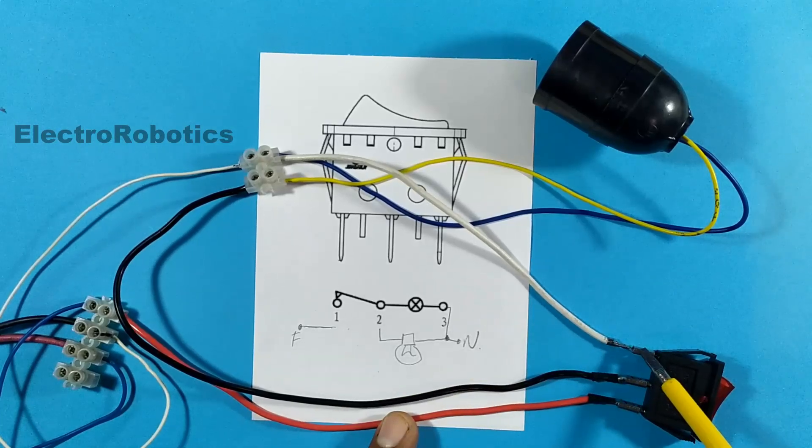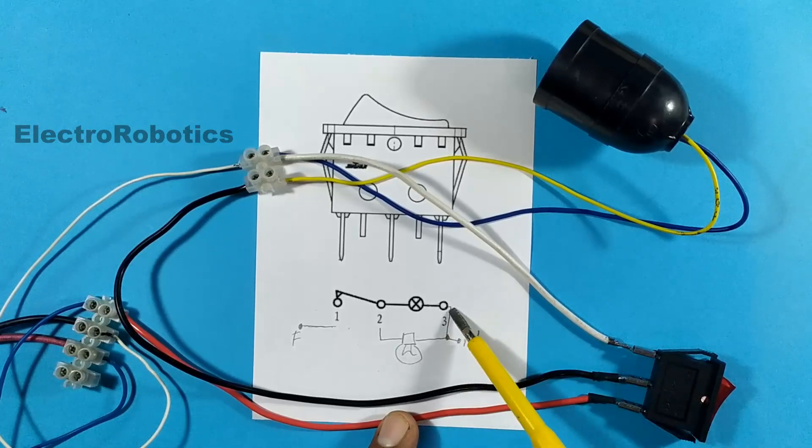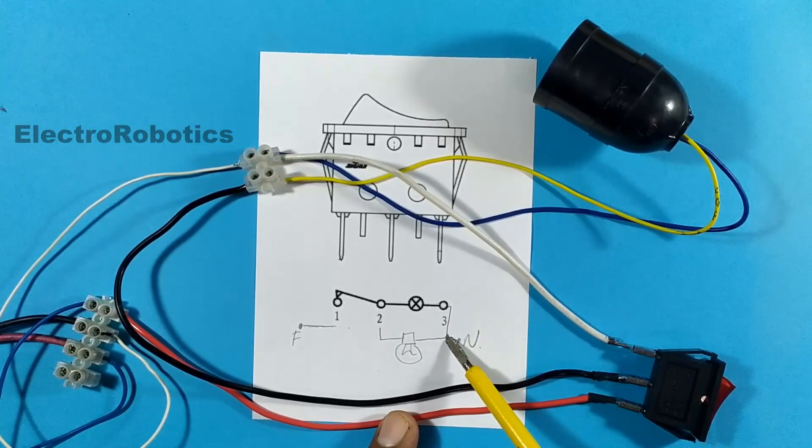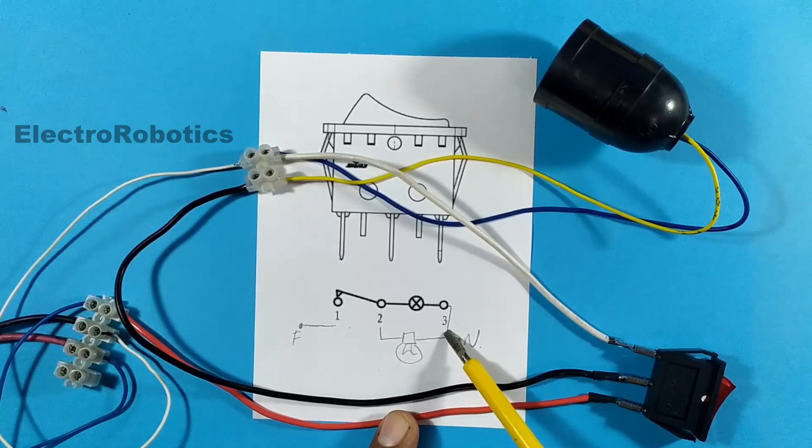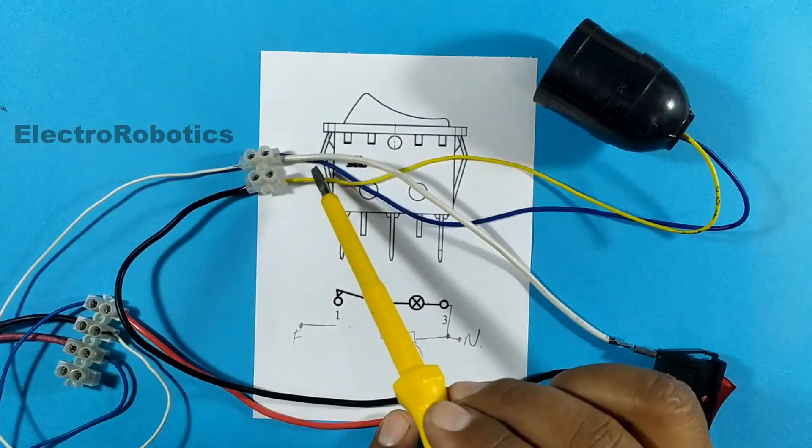Now if you look at the white cable, the end or pin 3 connects directly to neutral or at the end of the light bulb. And as you can see here, the white and blue wire are connected directly to neutral.